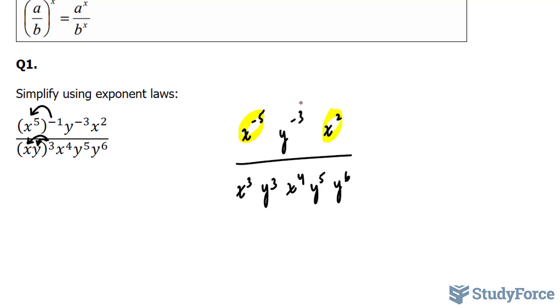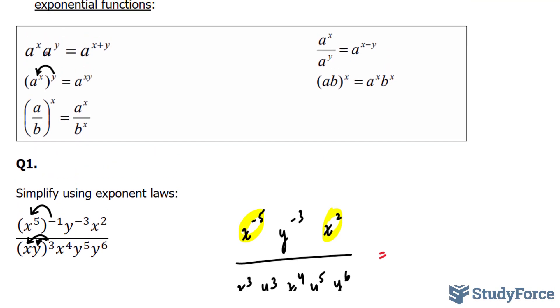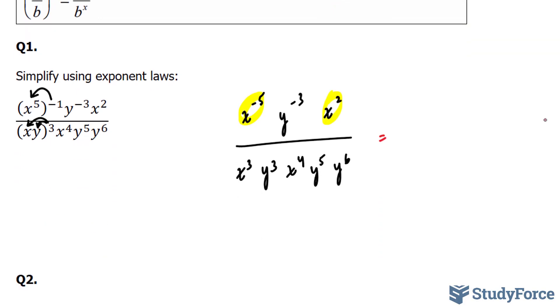Imagine this y didn't exist. You would be multiplying this with this. And we know that when you multiply two variables that are the same, you use the product rule, and in that case, you add the exponents, so I'm going to add negative 5 and 2. Negative 5 plus 2 is equal to negative 3. And this y stays the way it is.